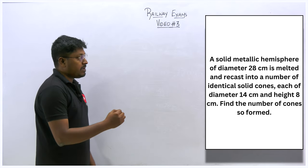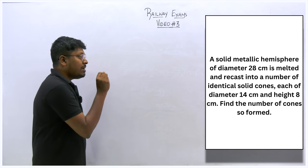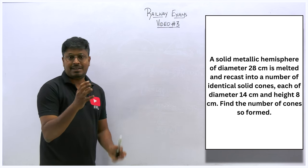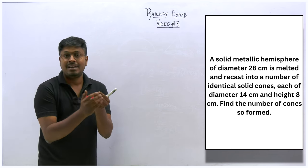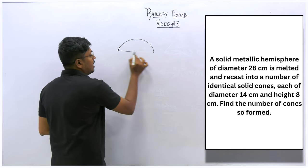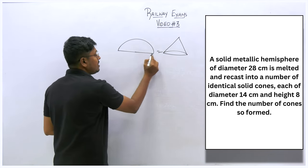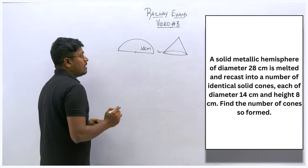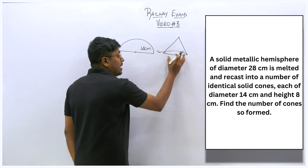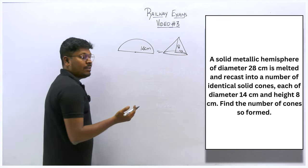Next question: a solid metallic hemisphere of diameter 28 cm (radius 14 cm) is melted and recast into a number of solid cones, each with diameter 14 cm (radius 7 cm) and height 8 cm. Find the number of cones formed. Many students doubt this type of question.